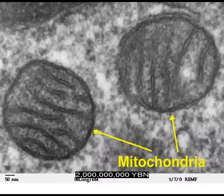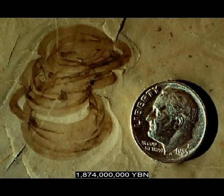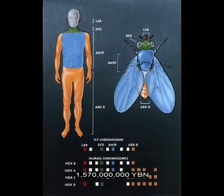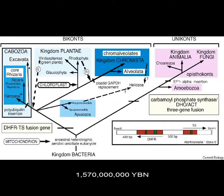Mitochondria are organelles in most eukaryotic cells where cellular respiration occurs and most of the ATP is produced. Earliest large filamentous fossil: Grypania. Grypania spiralis is about 10 centimeters long and is thought to be either a green alga or a large cyanobacterium — if a eukaryote, Grypania would be the earliest eukaryote fossil. End of the banded iron formation. First homeobox genes evolve — these genes regulate the building of major body parts in algae, plants, fungi, and animals. The ancestor of all living eukaryotes divides into biconts and uniconts.